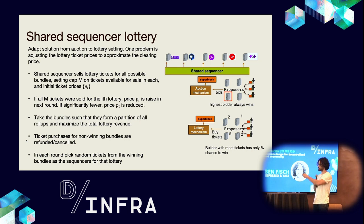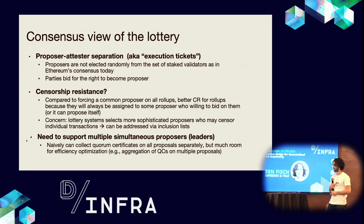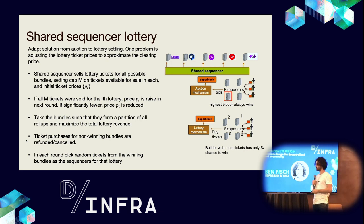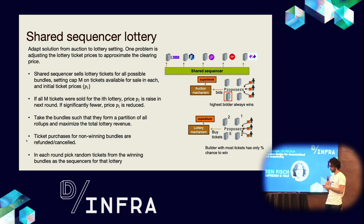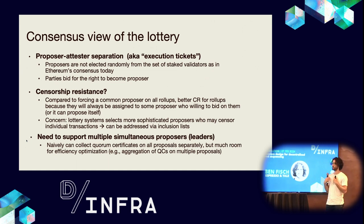One difference to emphasize: in an auction, the highest bidder always wins. Here, the proposer or builder with the most tickets only has some percentage chance of winning. It's actually advantageous for you as a proposer to not necessarily buy all the tickets — you can make more in expectation by allowing some other parties to buy tickets too. A consensus view of this lottery is that it represents proposer-tester separation, also known as execution tickets in the Ethereum community. Proposers are not randomly elected from staked validators as in Ethereum's consensus today; instead, parties bid for the right to become the proposer.